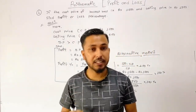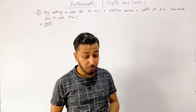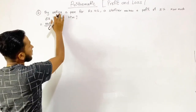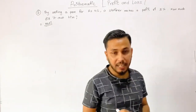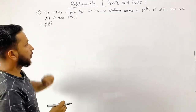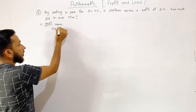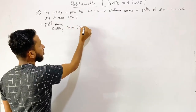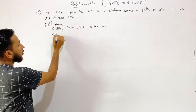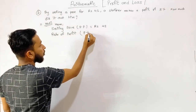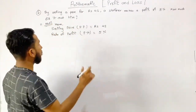Now, Problem 2: By selling a pen for Rupees 42, a man makes a profit of 5%. Find the cost price. Given: Selling price SP equals Rupees 42. Profit percent equals 5%. We need to find cost price CP. Since we have a profit condition, we use the formula: CP equals 100 into SP by 100 plus profit percentage.